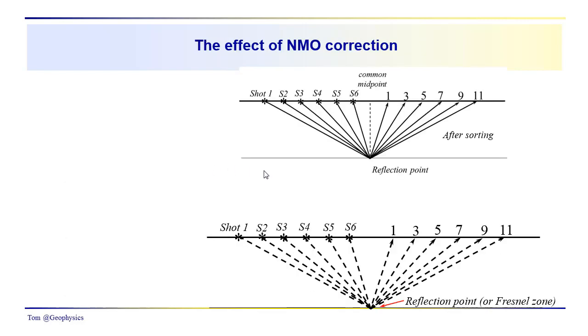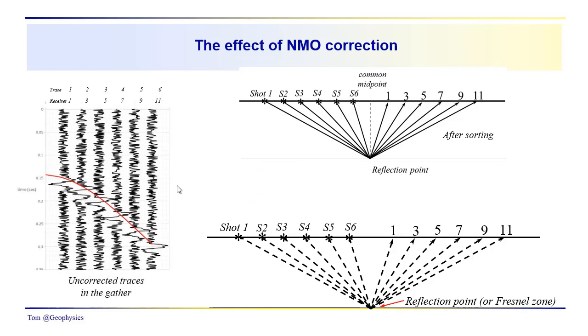So we started off by asking what is the effect of this NMO correction? I think you've seen that in the process of correcting these traces, after NMO correction, the arrival times of all these events come in at approximately the same time.